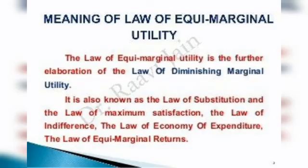The next topic is the Law of Equimarginal Utility. The Law of Equimarginal Utility states that a consumer will distribute his money and income between goods in such a way that the utility derived from the last rupee spent on each good is equal. The consumer distributes income so that the satisfaction from the last rupee spent is equal across all goods.